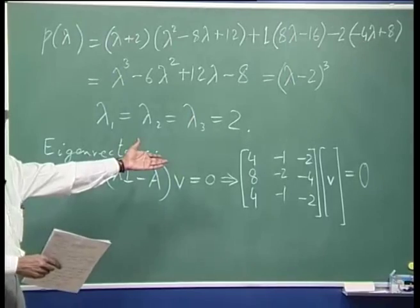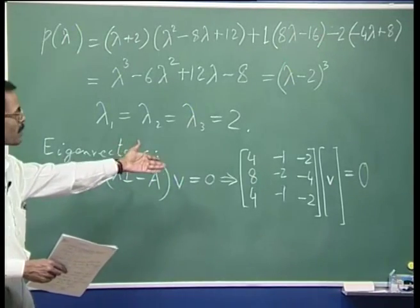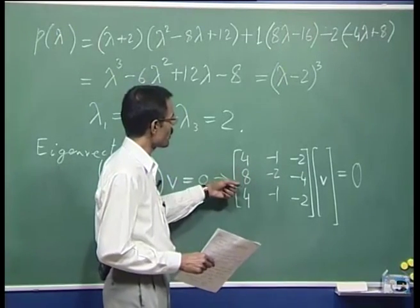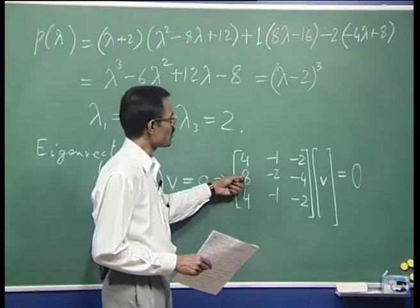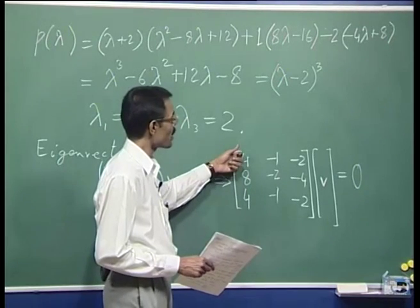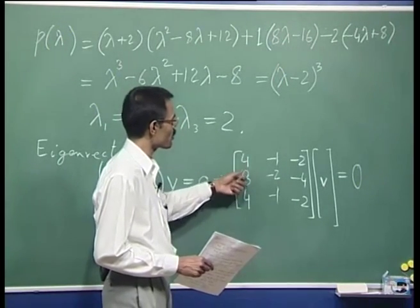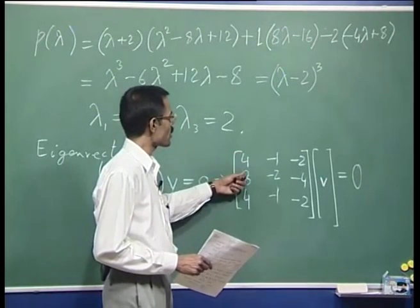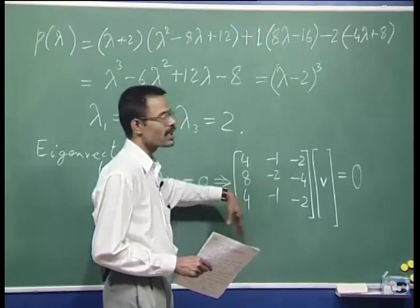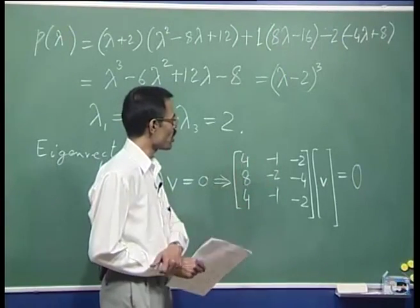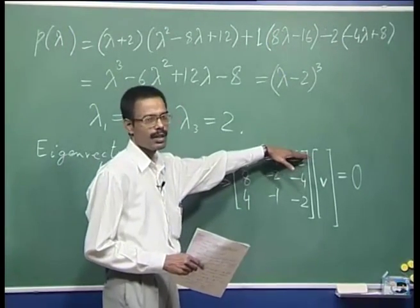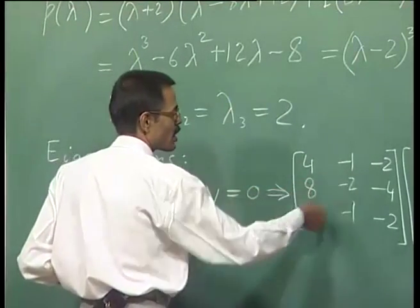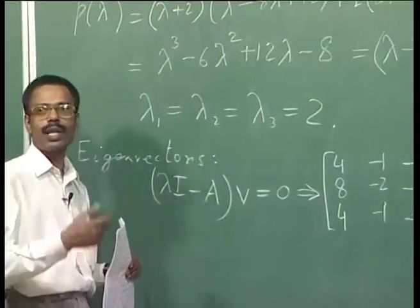We will use elementary row transformations. In this case it is very easy because the second row is exactly twice the first row and the third row is the same as the first row. That means through elementary row operations the second and third rows will immediately go to zero, and only the first row is of use. Through elementary row operations in the second and third rows we will get all zeros.